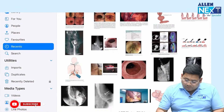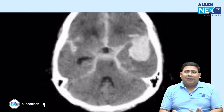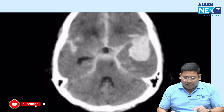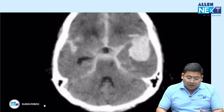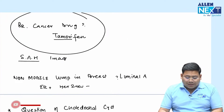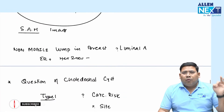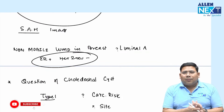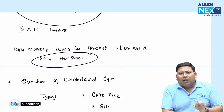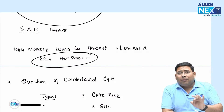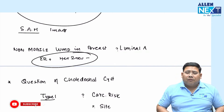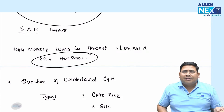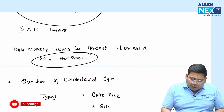There was an image of SAH — subarachnoid hemorrhage. This is the classical image of SAH. Also, a question on a mobile lump with ER/PR positive and HER2 negative: if ER/PR positive and HER2 negative, it could be Luminal A or Luminal B. Low Ki-67 values indicate Luminal A; high Ki-67 values indicate Luminal B.